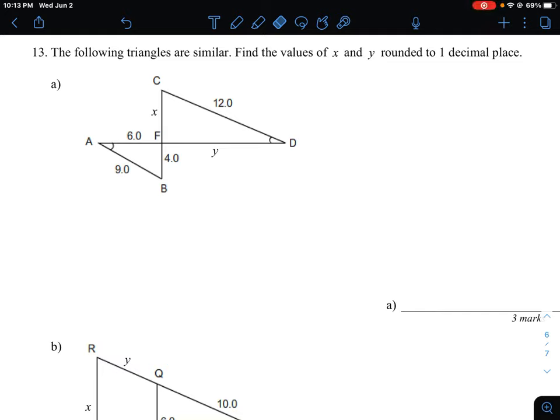Okay, so let's take a look at how to do question number 13. We have a set of similar triangles and we are asked to find the missing values for some of the missing sides here. It looks like we're looking for x and y in this question.